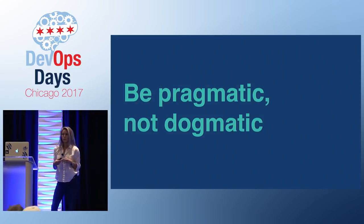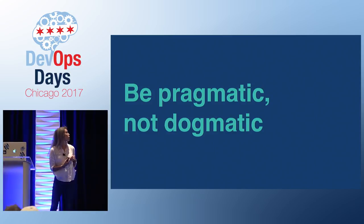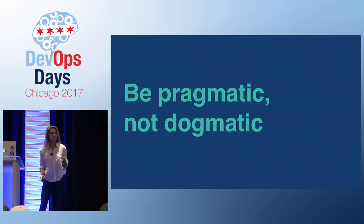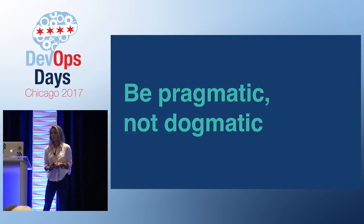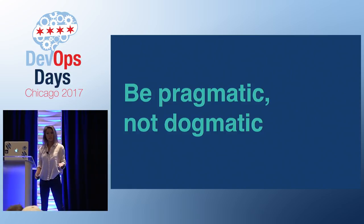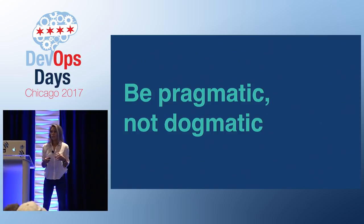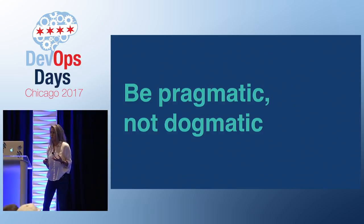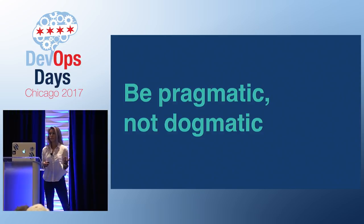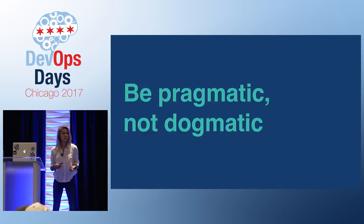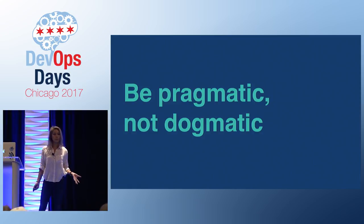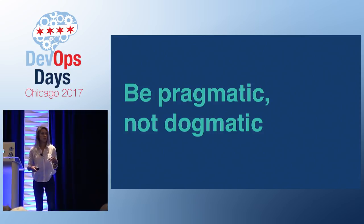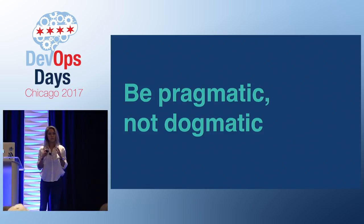Before I start talking about our graph model, I'd like to frame my talk with this saying that I think embodies everything that my team does at LendingClub: be pragmatic, not dogmatic. Over the years, we've worked toward a consistent, standard, unified build, packaging, and deployment model. So whether an app is written in Java or Node or Go, whether we're deploying that app into our production AWS environment or our non-prod data center environment, we want everything to look, feel, deploy, and run exactly the same.